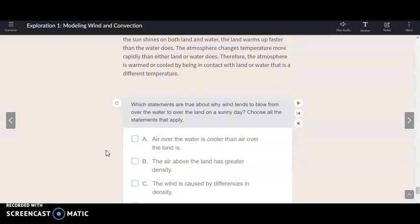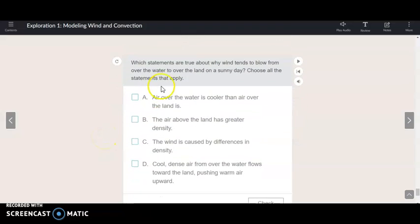Let's look at why. Which statements are true about why wind tends to blow from over the water, over the land, on a sunny day? Choose all the statements that apply. Okay. A. Air over the water is cooler than air over the land is.